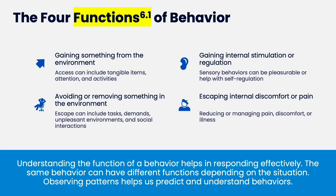The four functions — I'm going to do this quickly but cover each one thoroughly. We have both environment and body. The first function falls under positive reinforcement: gaining something from the environment — access to tangible items, attention, or activities. When someone talks about five functions of behavior, they split this one into attention and tangible. But it's also activities or anything in the environment. The function is gaining anything.